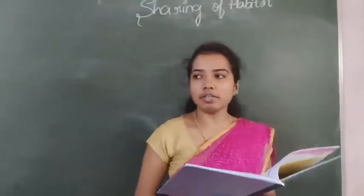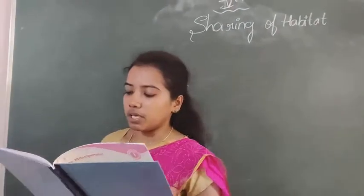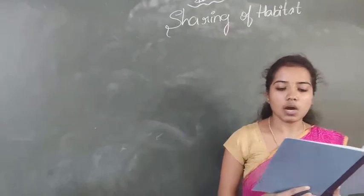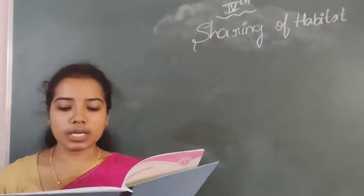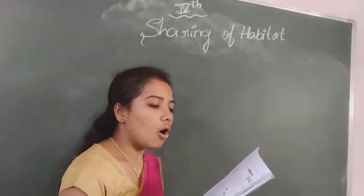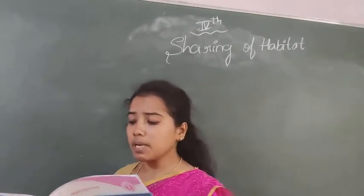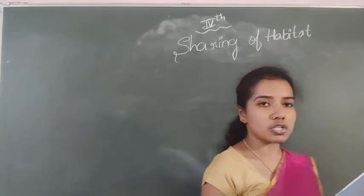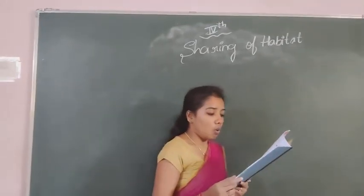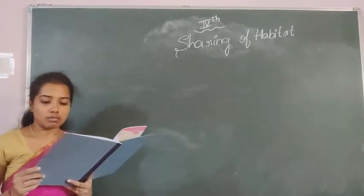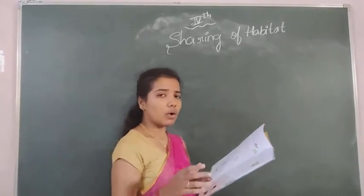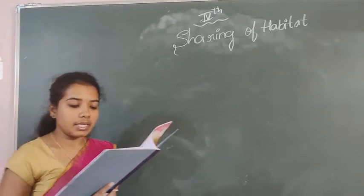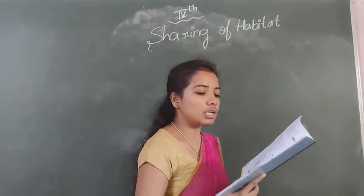Nest building as an activity has two types: sculpting and assembly. Sculpting is the process of removing material from a place in order to achieve a desired shape or structure — usually involving the ground or a plant to create a hole. Assembly is the process of gathering various materials to support a nesting structure. Usually, animals build with whatever material is available in their immediate surroundings. Plant material is predominantly used to construct a nest.